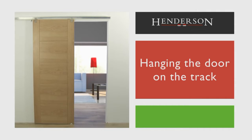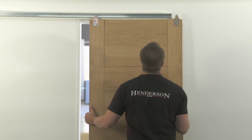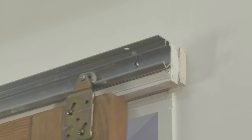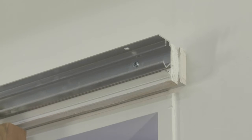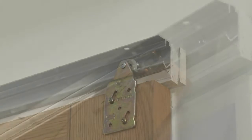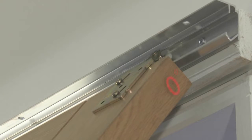Hanging the door on the track. There are two ways of hanging the door on the track. The easiest way is to slide the door in from the end of the track. However, if the space is limited and this is not possible,